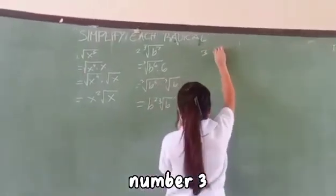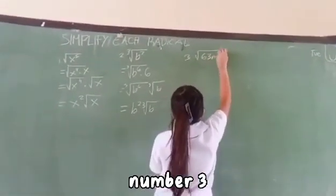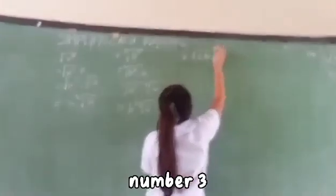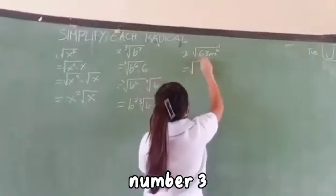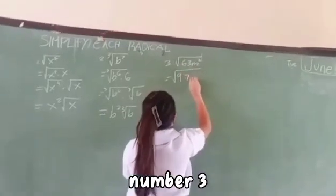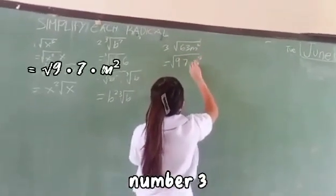Number three: square root 63M squared. Now with numbers, 63 can be divided or unmultiplied to equal 9 times 7, while M squared stays there.